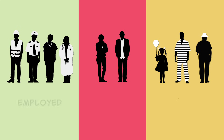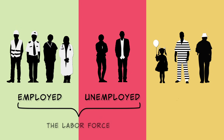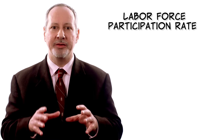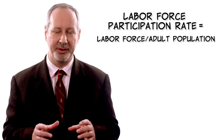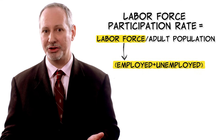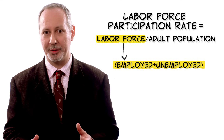In earlier videos, we looked at unemployment — when people want a job but can't find one. But it's also important to look at the factors that determine whether people want a job. Why are some people in the labor force while others are not? The labor force participation rate is defined as the labor force divided by the adult population, in both cases excluding people in prison and in the military.